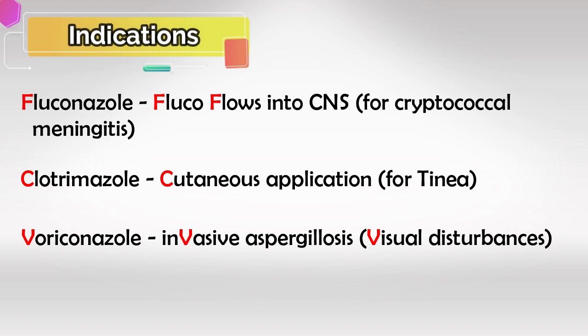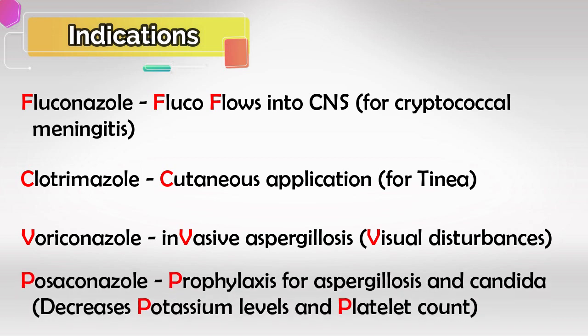Voriconazole is for invasive aspergillosis, and it causes visual disturbance. Posaconazole is the most important one — it's used for prophylaxis of aspergillosis and candida in immunocompromised patients. Remember that it causes a decrease in potassium levels and platelet count.